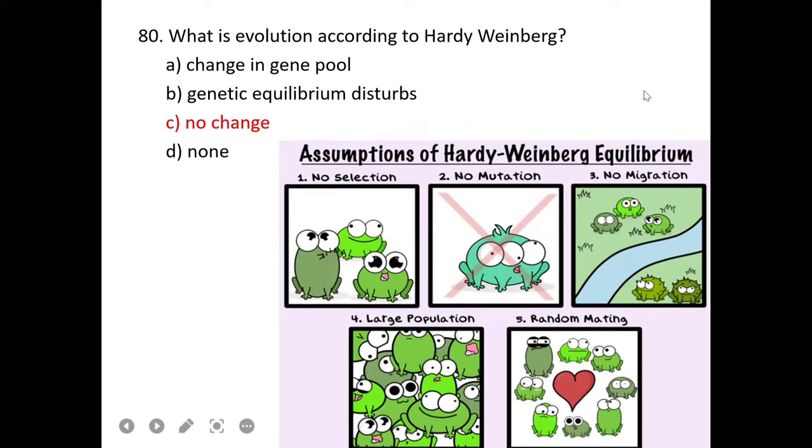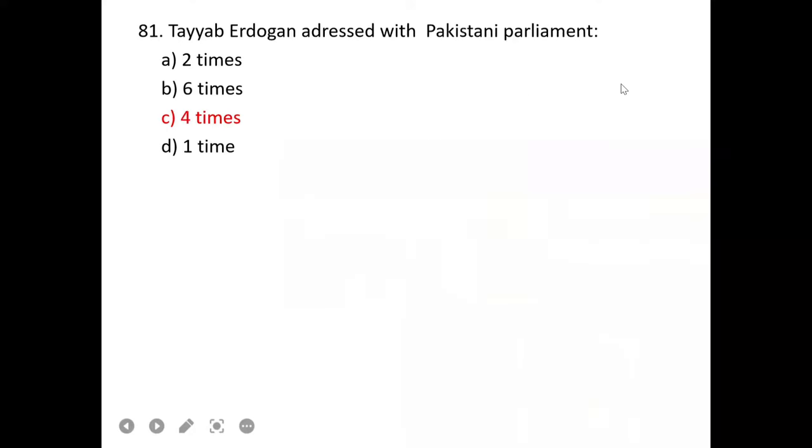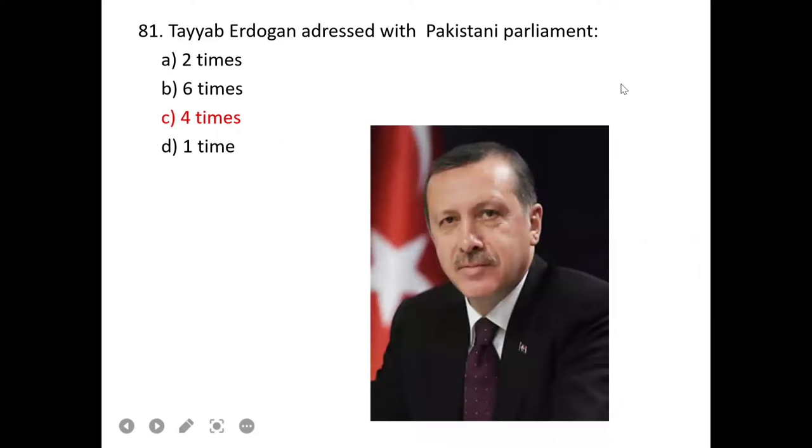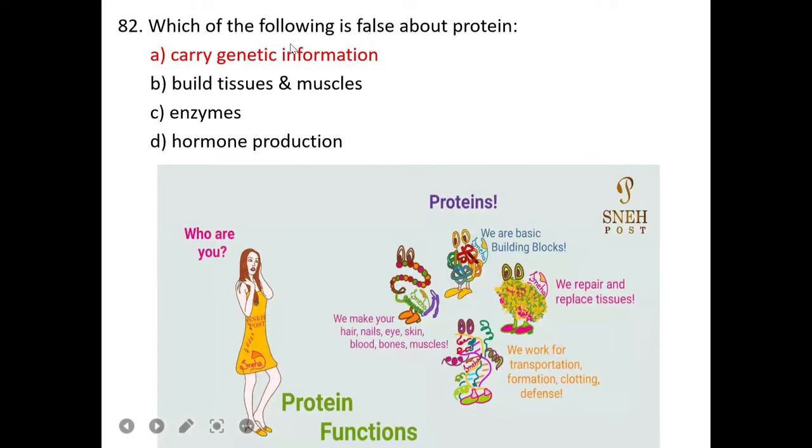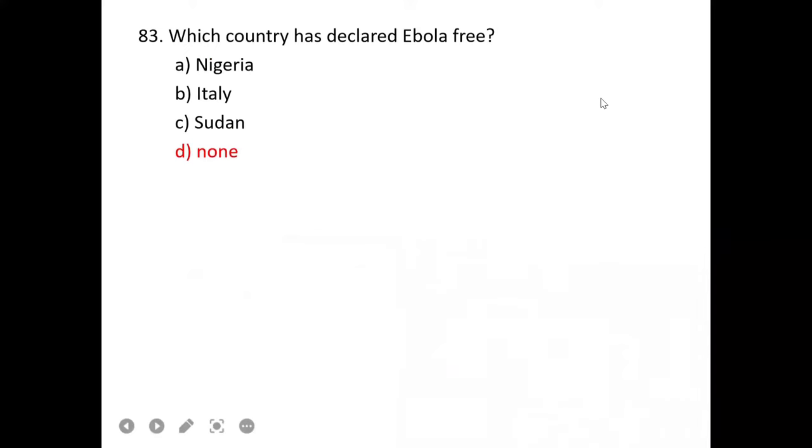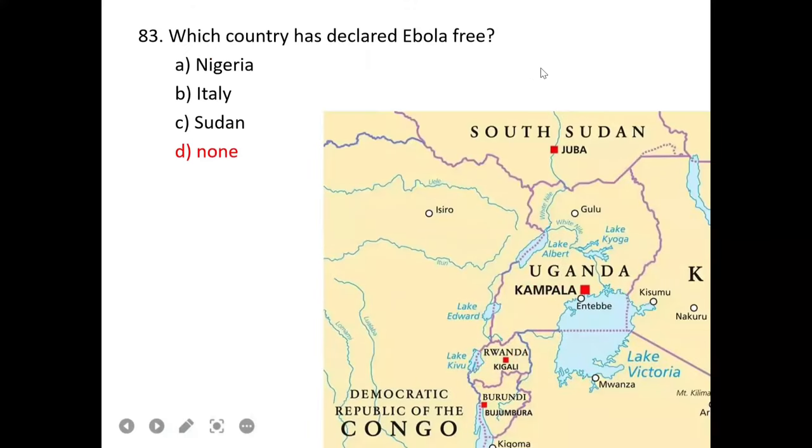Tayyip Erdogan addressed the Pakistani parliament four times. Which of the following is false about protein? Proteins are not carriers of genetic information. It is basically the DNA which carries genetic information.